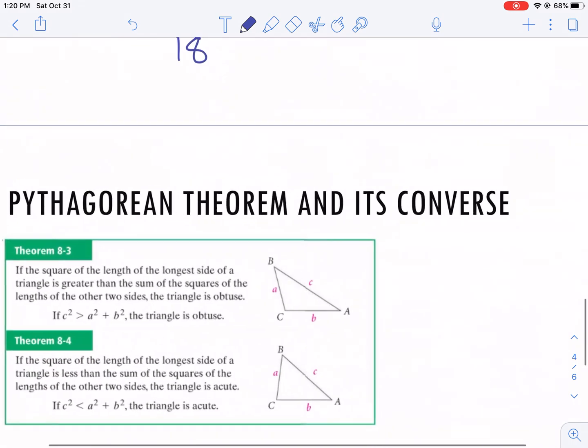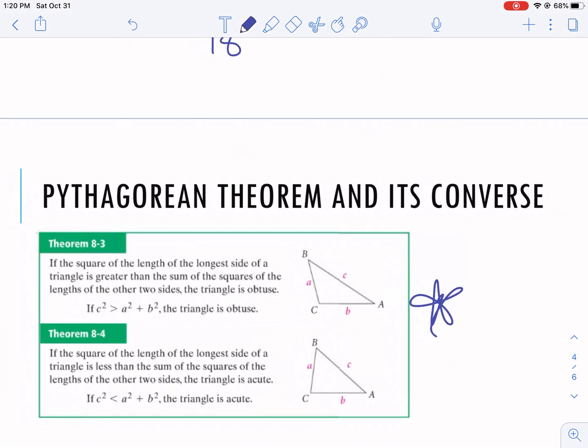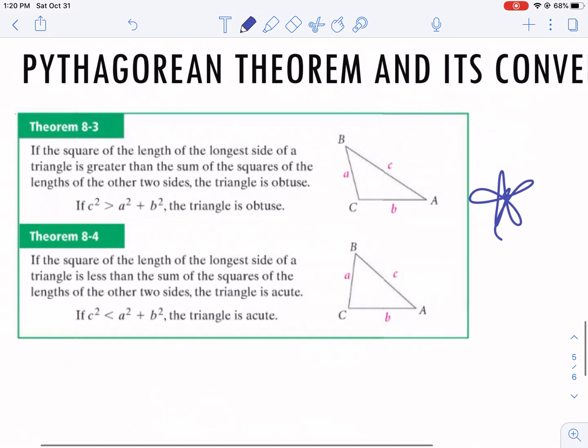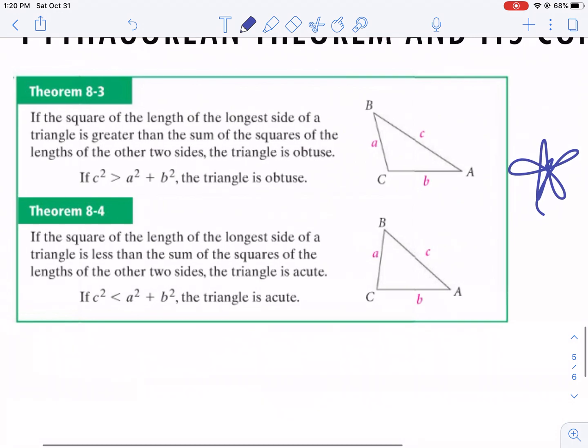So this is where we're going to use this thing called the converse of the Pythagorean theorem. If we have the Pythagorean theorem, what it is telling me is that if I have a squared plus b squared, and when I do c squared, this side, I sometimes write it like this: a squared plus b squared is less than c squared.